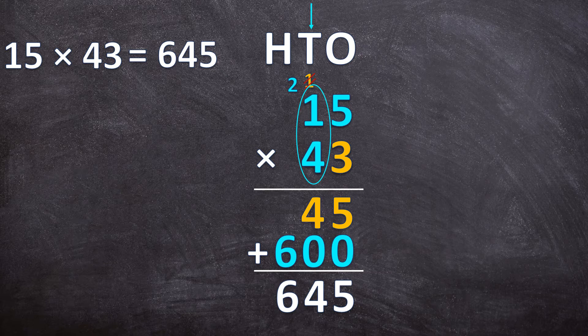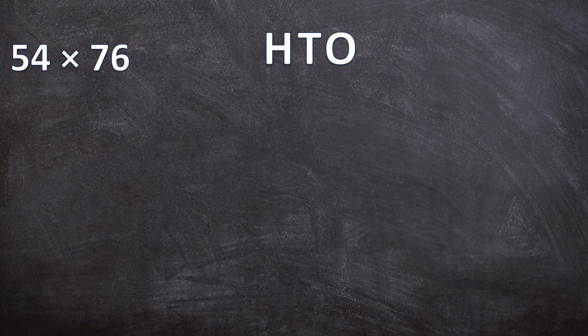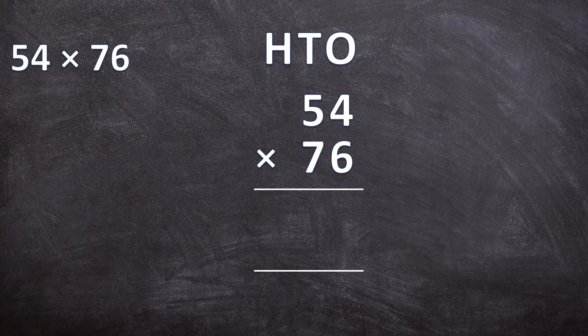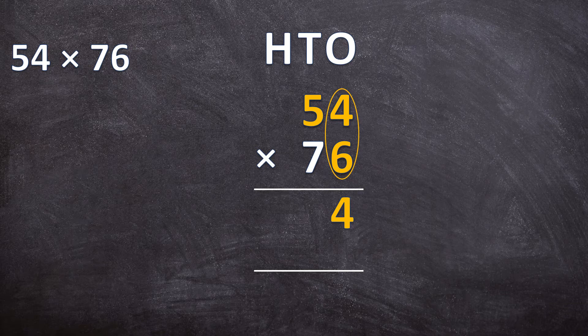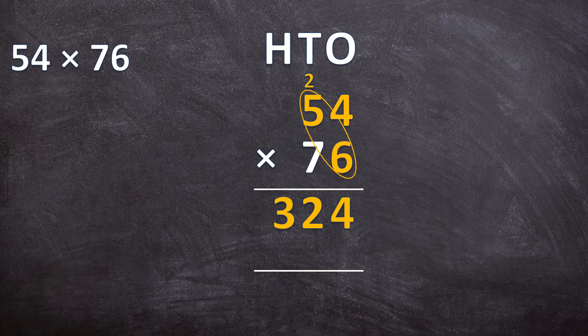Now let's look at our second example: 54 times 76. Write your numbers neatly exactly underneath each other. We break up the bottom number and multiply separately with 6 and with 70. So 6 times 54 first — multiply the ones: 4 times 6 is 24, write down the 4 and carry the 2. Now multiply 6 by 5: 6 times 5 is 30, plus the carried 2 is 32. Since we only have two-digit numbers, we write the 32 directly, with the 3 in the hundreds place.